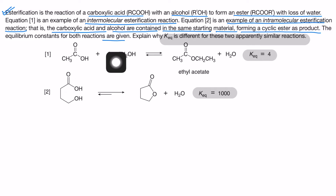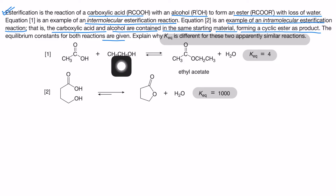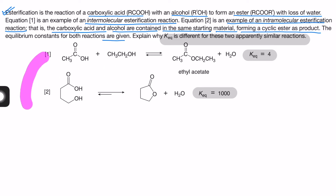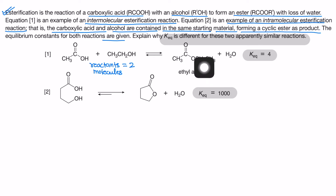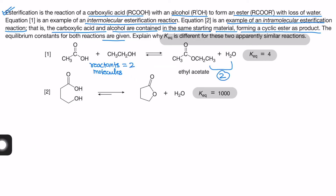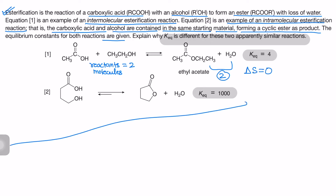If we look at the first reaction, the number of reactant molecules is two — acetic acid and ethanol. The number of product molecules is also two — ethyl acetate and water. So in this case, the entropy change is more or less zero, or very negligible.